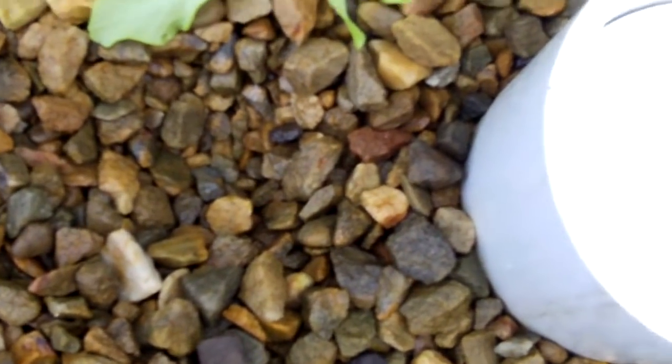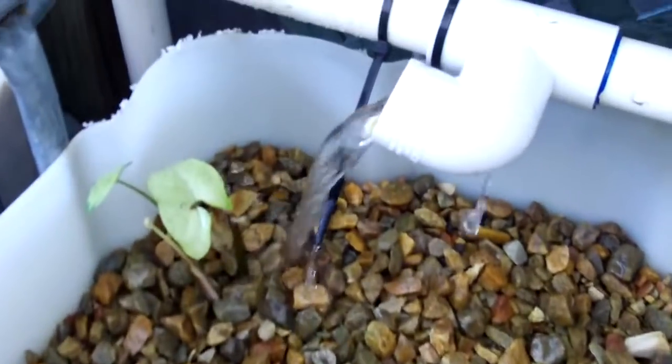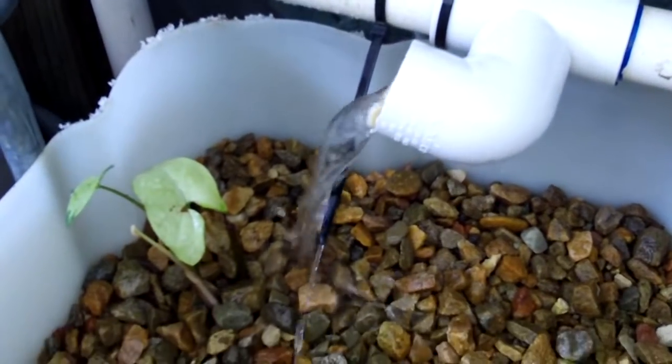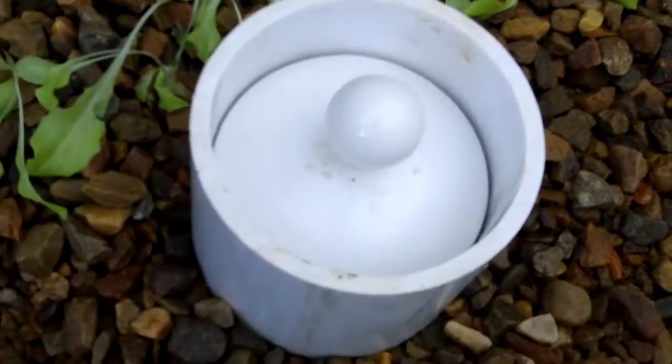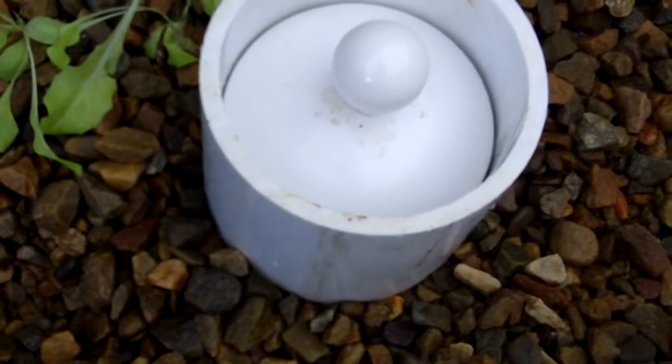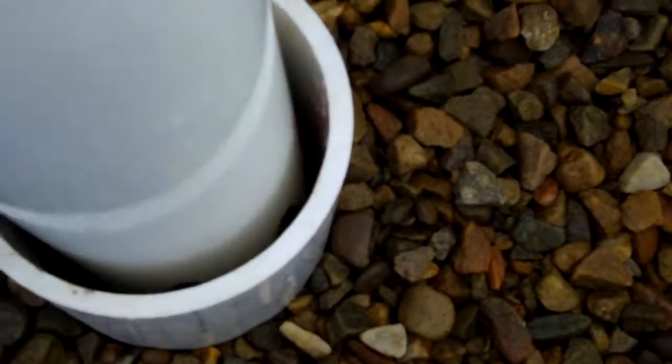And that's what your bell siphon is about. The outer shell is the gravel guard - it keeps the gravel from interfering. I can break the siphon like so.